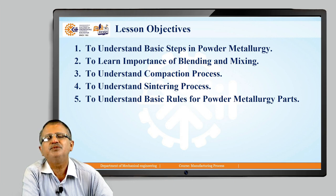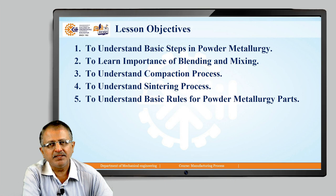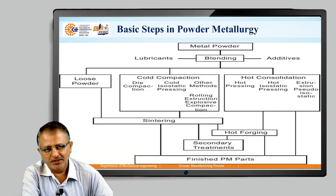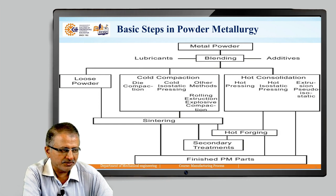The lesson objective is to understand and learn the basic steps in powder metallurgy. These steps are: after powder fabrication, the blending and mixing, then compaction, then sintering, and then the basic rules for the powder metallurgy part. This covers all aspects pertaining to powder metallurgy.